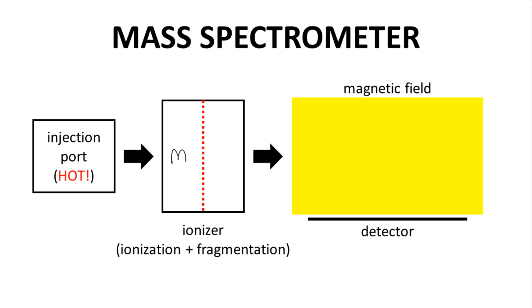This ionization process is called electron impact. Upon losing an electron, the parent molecule becomes a positively charged cation.